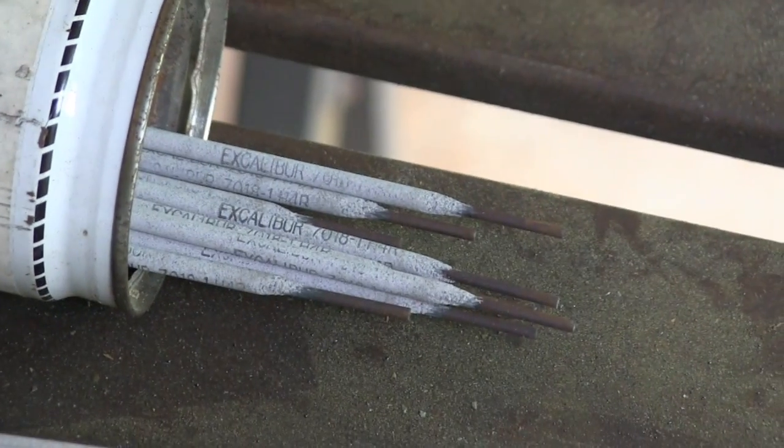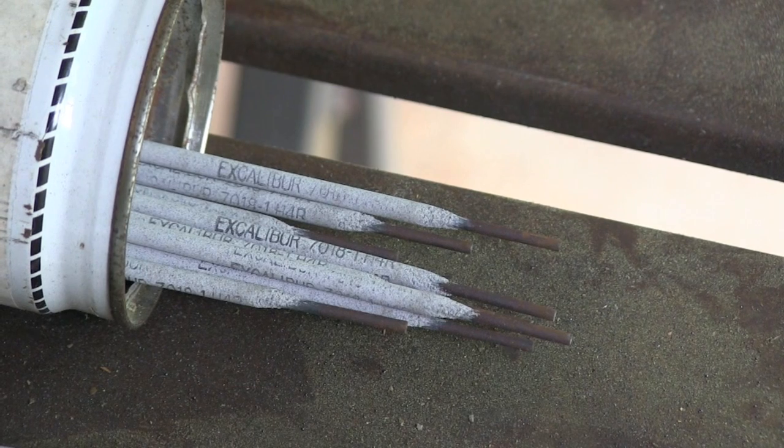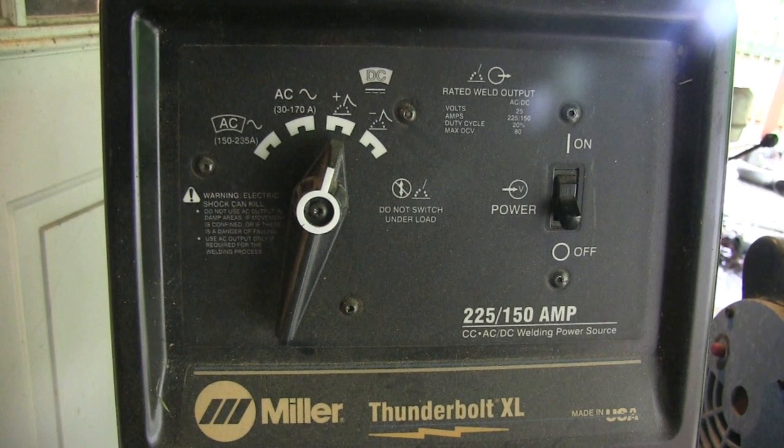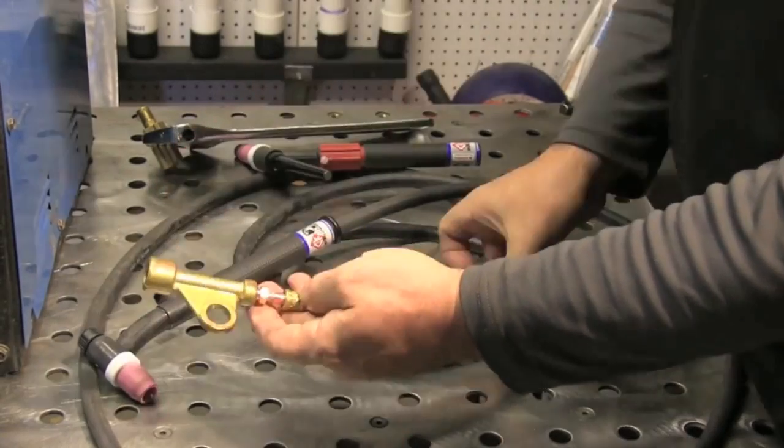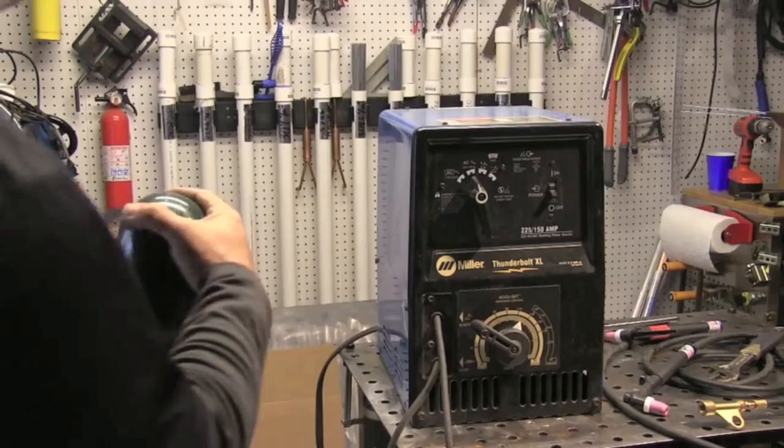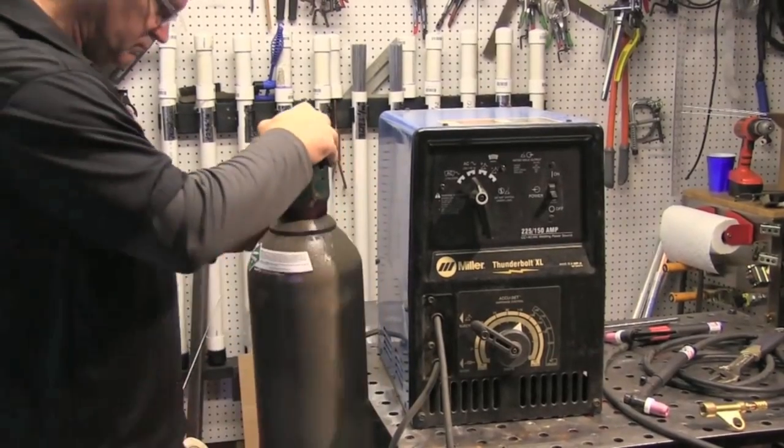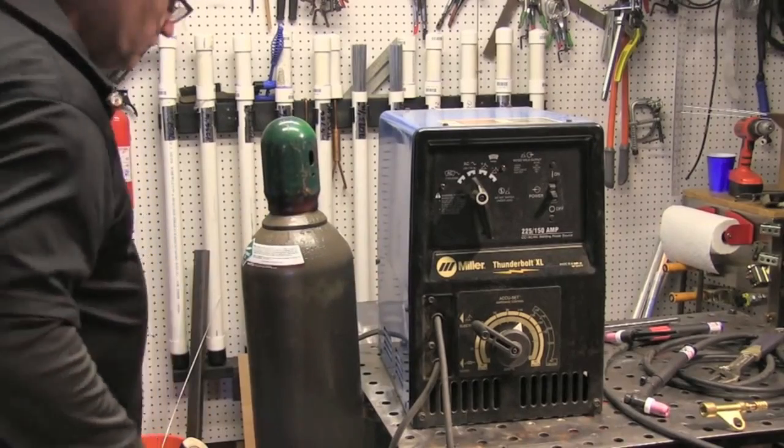I'm using this little old school Miller Thunderbolt AC DC machine I got off Craigslist for somewhere around two to three hundred bucks. Just as a quick reminder, I did a video not too long ago setting this thing up using scratch start TIG.